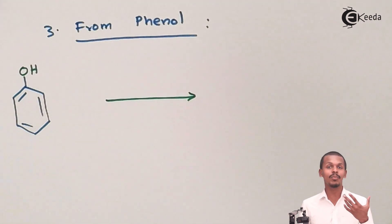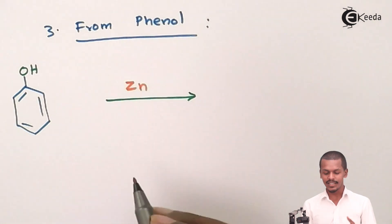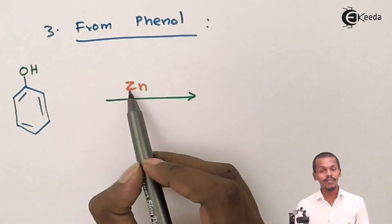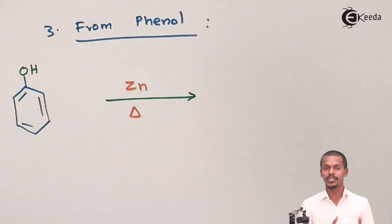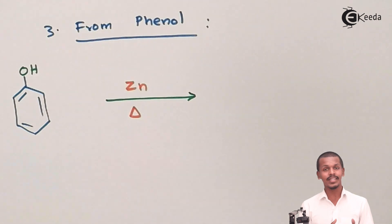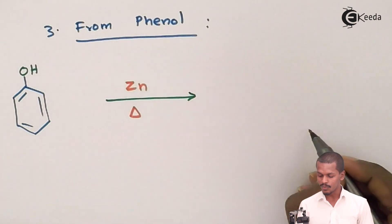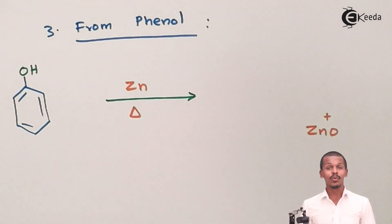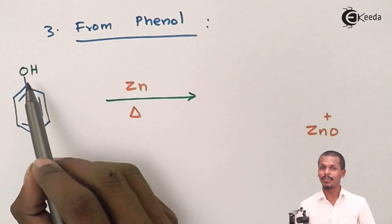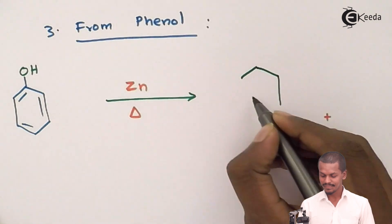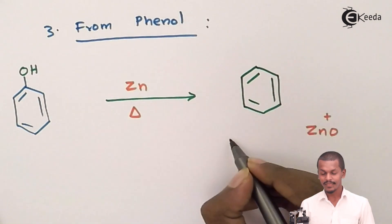We need to do a reduction process to remove the oxygen. That is the reason we use zinc dust and heat it. Zinc will remove the oxygen atom; since zinc has an oxidation state of +2 and oxygen has an oxidation state of -2, zinc removes the oxygen in the form of ZnO. The only thing remaining is the phenyl ring and a hydrogen atom, which together form benzene.